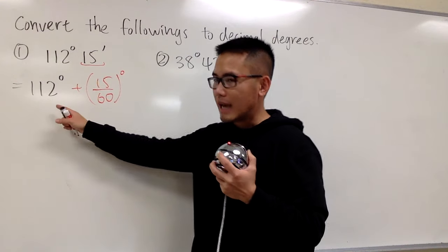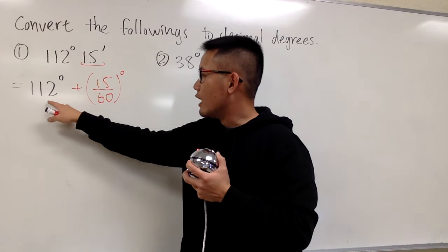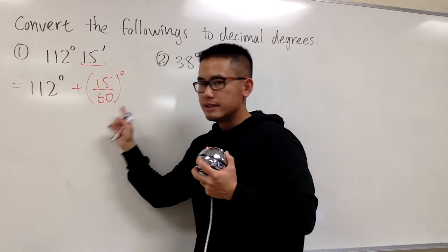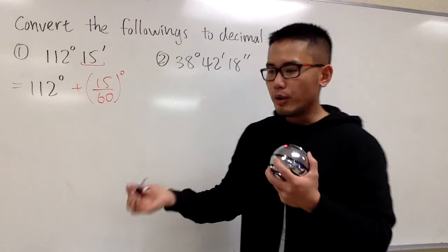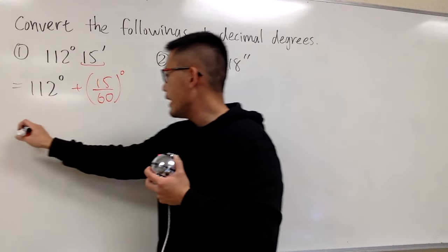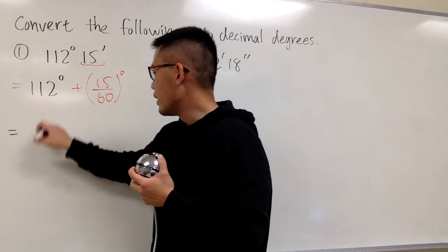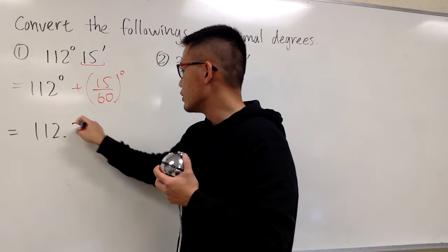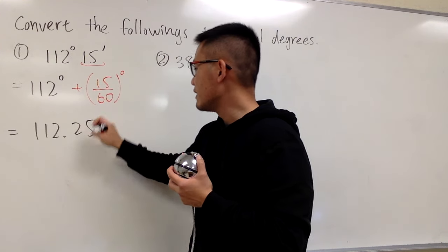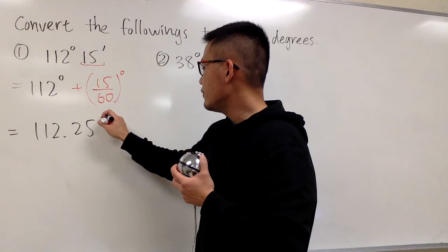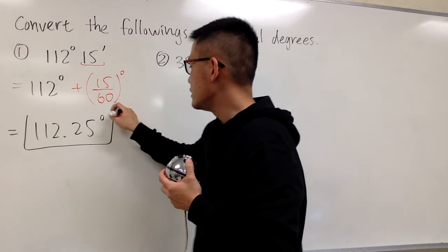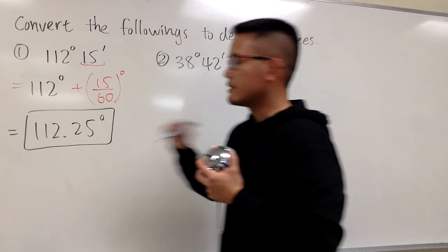You can use the calculator. So 112 plus 15 over 60 — all in all, we will end up with 112.25 degrees. And that's it.